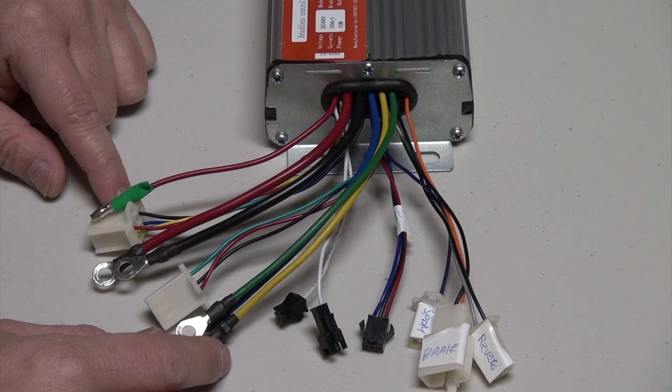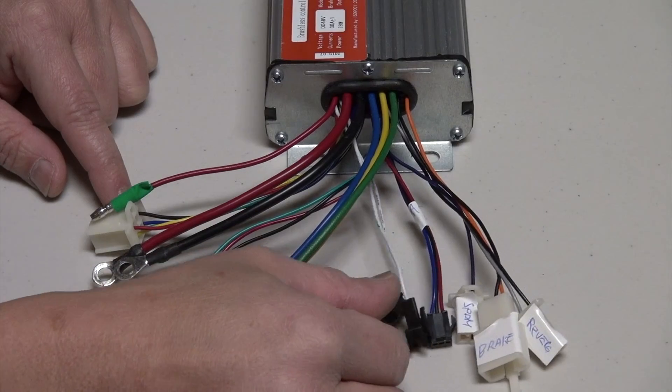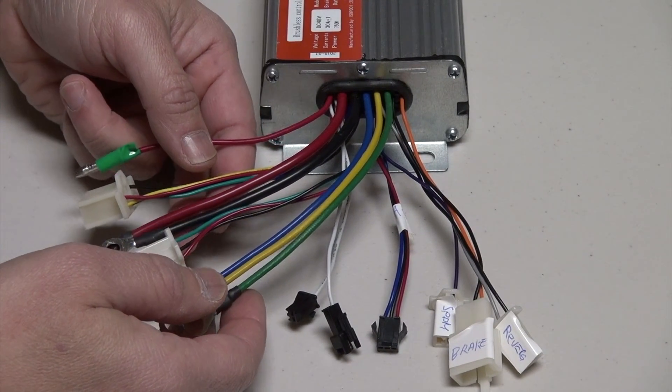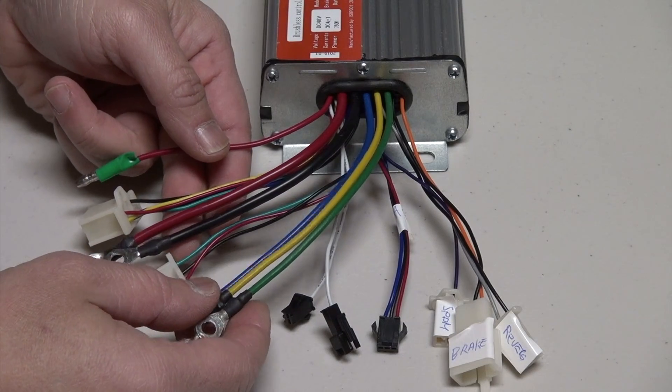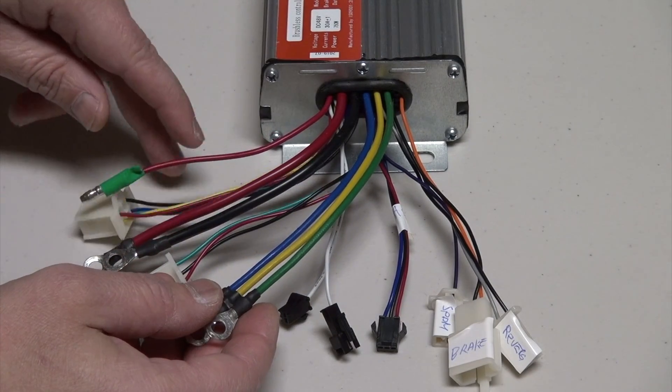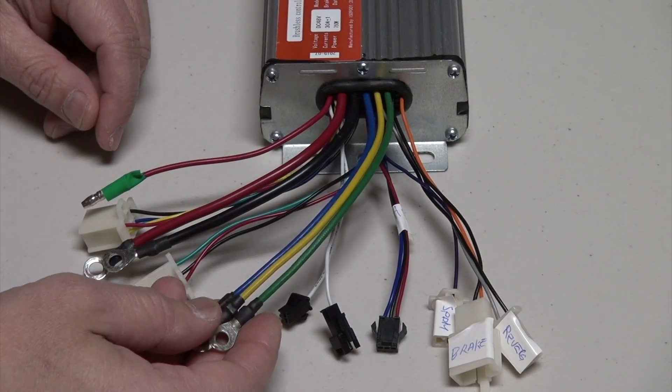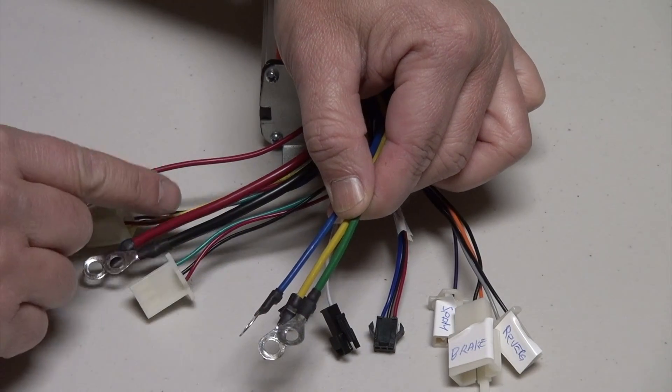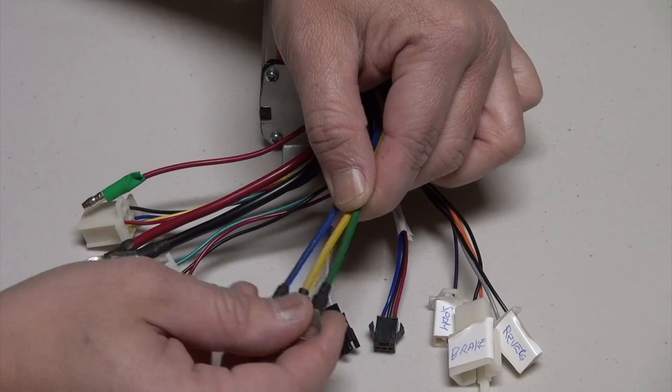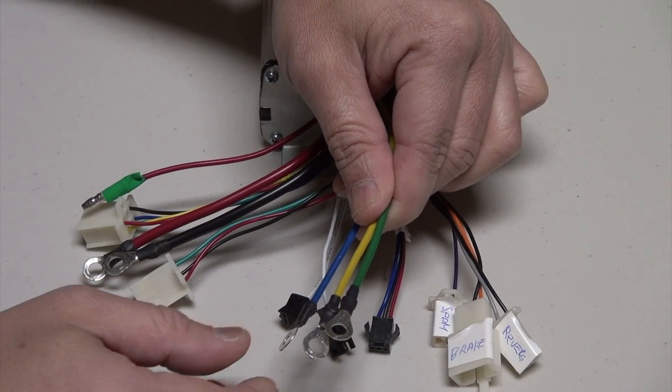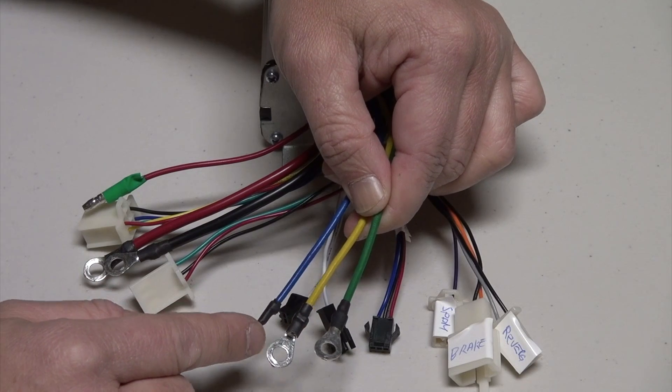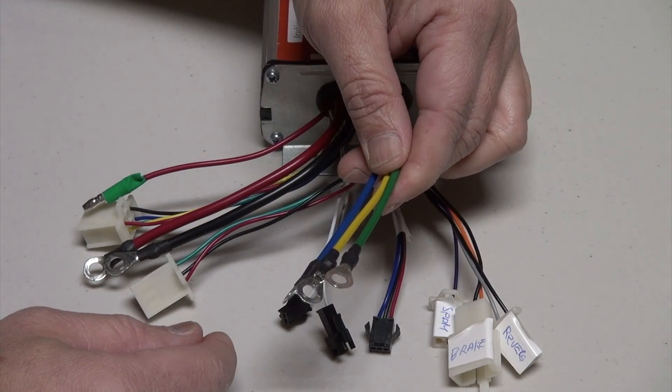If you're new to BLDC controllers these can look very intimidating, but if you've seen a couple before and you've worked on them, these are pretty standard. The first group here are the core operational wires. These wires you need to connect in order for the motor to operate.